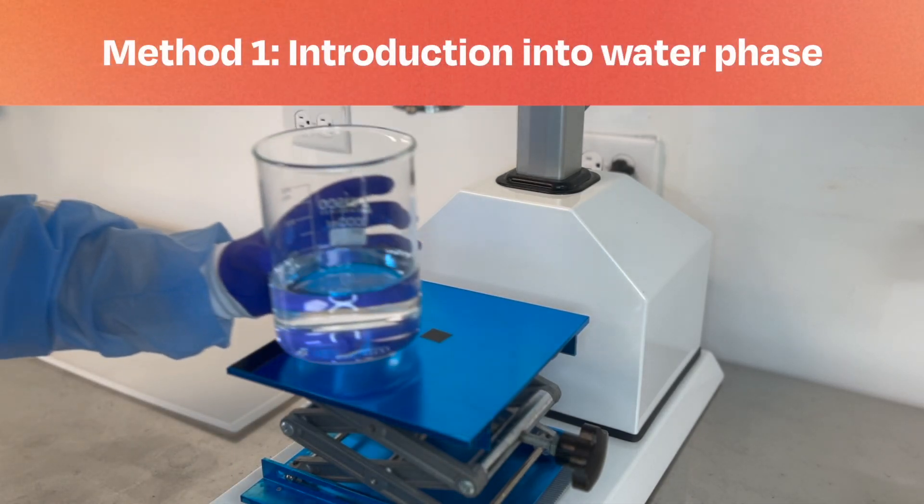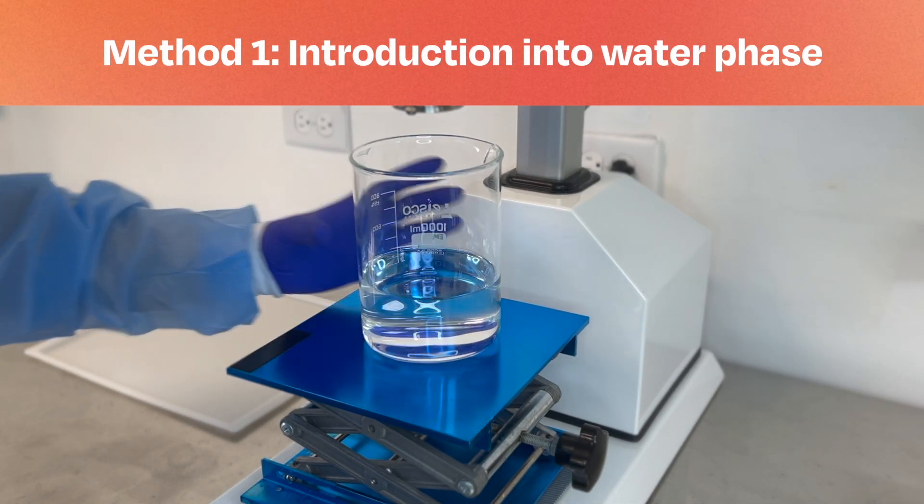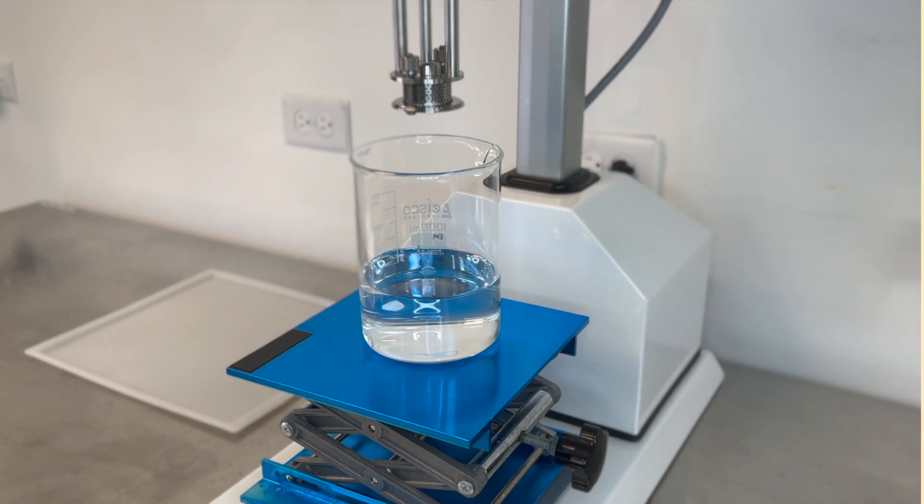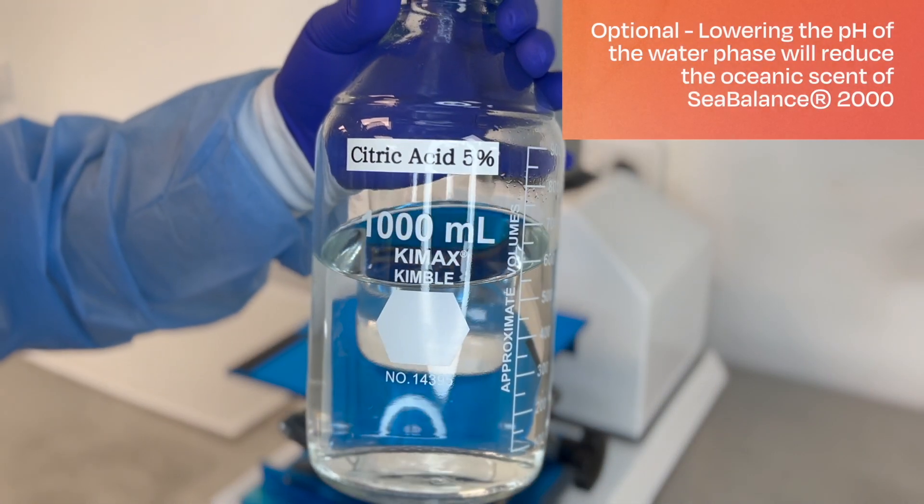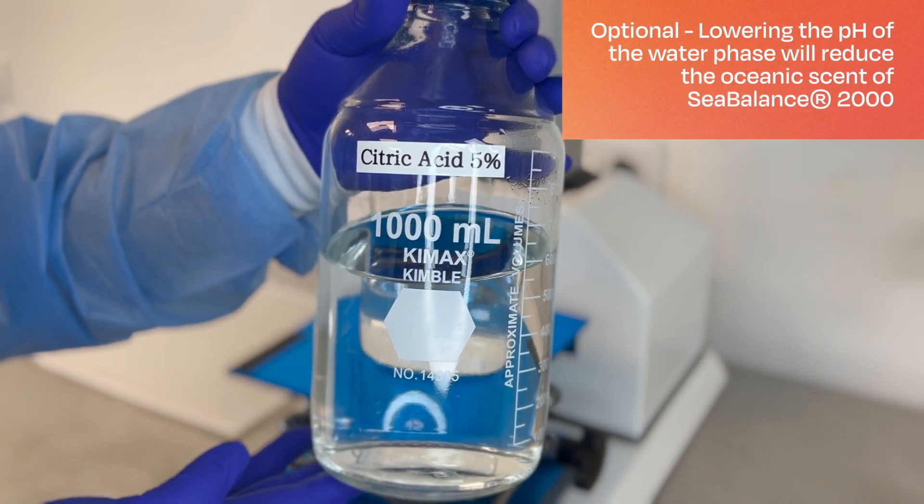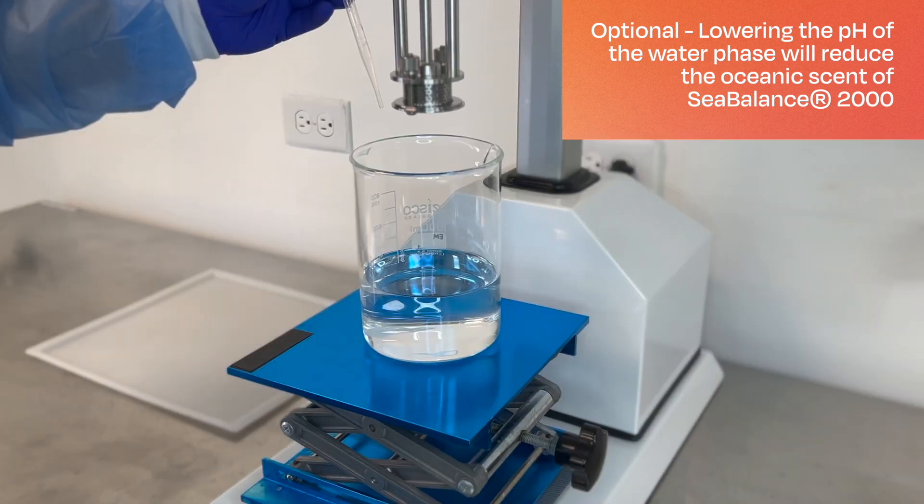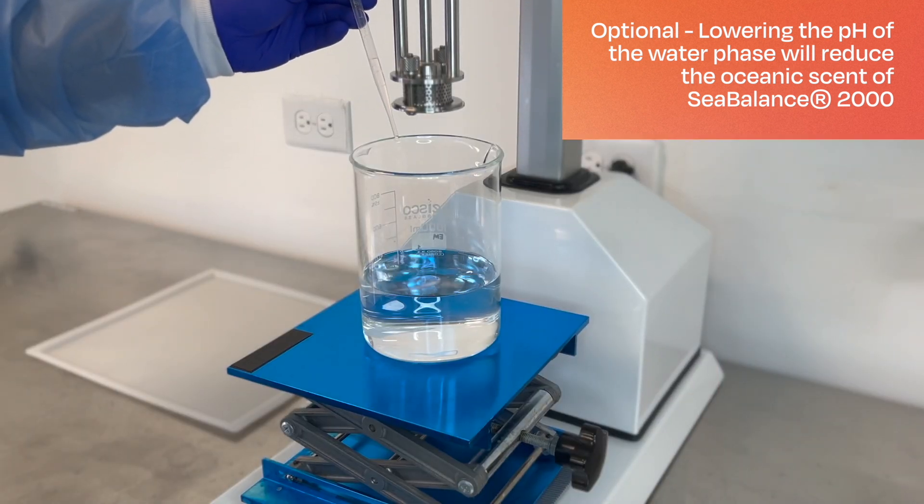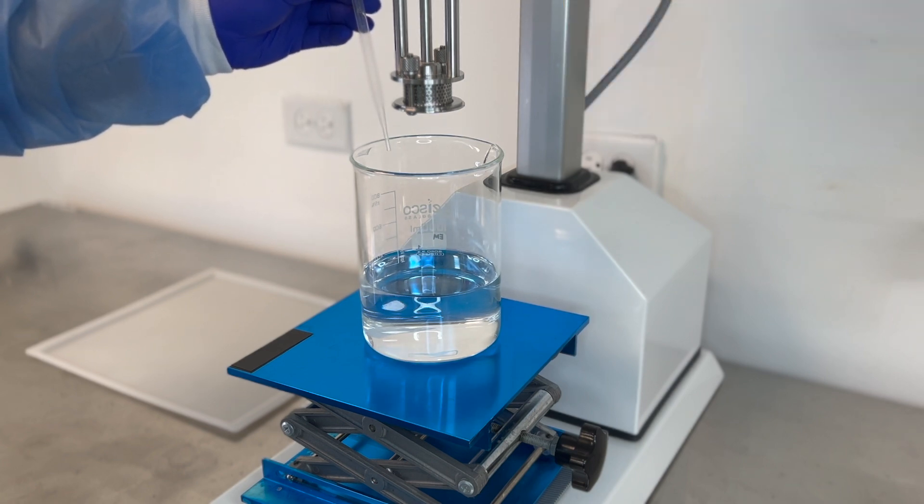Let's start with Method 1. When starting to work with Seabalance, you'll likely perceive an oceanic scent in its raw form. While you have the option to include a fragrance, an alternative for those desiring a scent-free solution is to mitigate the oceanic odor by introducing a weak acid into the water, effectively lowering the pH.